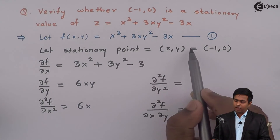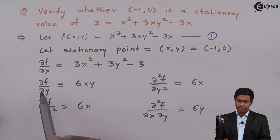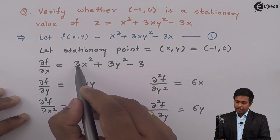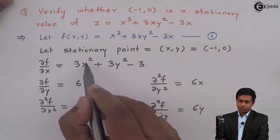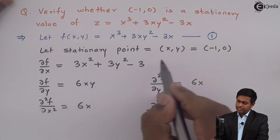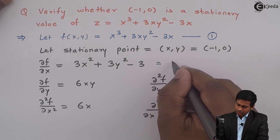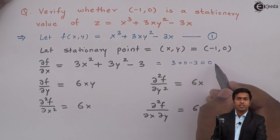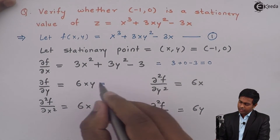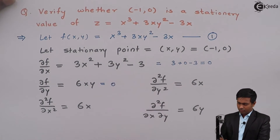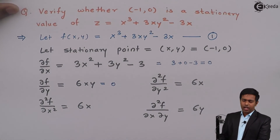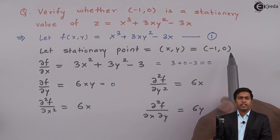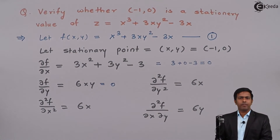Now we will substitute the stationary value (-1, 0) into ∂f/∂x and ∂f/∂y to check whether they are 0 or not. By substituting, we get 3 × (-1)² = 3, plus 3y² = 0, minus 3, giving 3 + 0 - 3 = 0. It means we are getting ∂f/∂x = 0. Next, for ∂f/∂y, with x = -1 and y = 0, we get 6 × (-1) × 0 = 0. So both ∂f/∂x and ∂f/∂y equal 0, meaning this point satisfies the required condition.